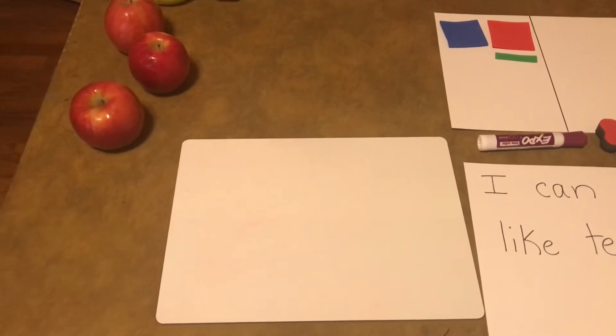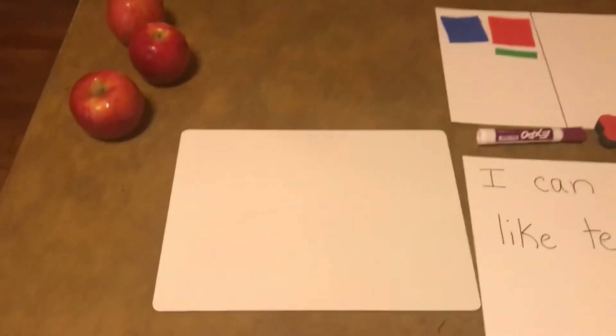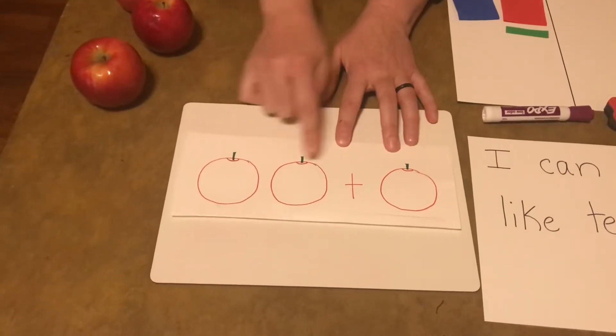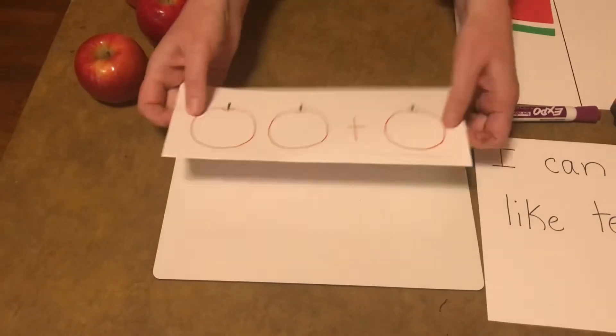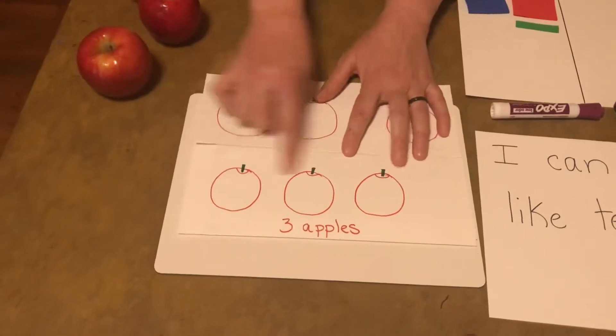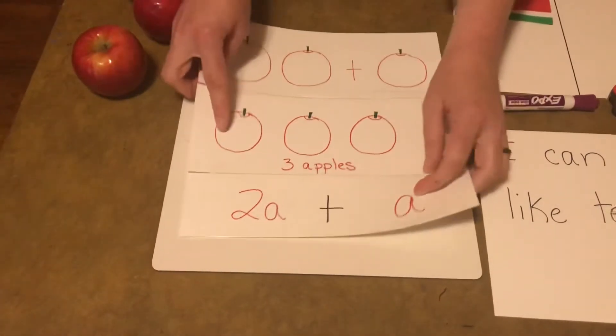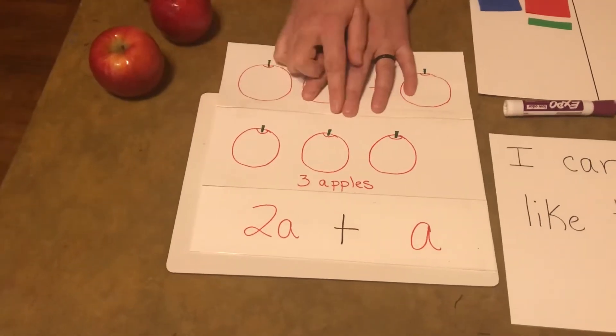Let's see this with some pictures. Here's our two apples plus one apple, and we said it was three apples when we combined them. Well, what if instead of saying apples, we just said A, A standing for apples.